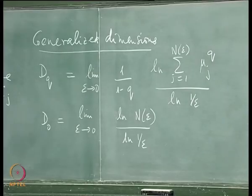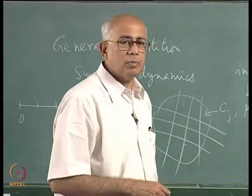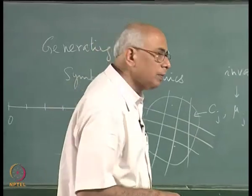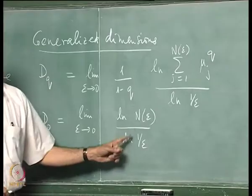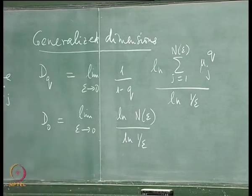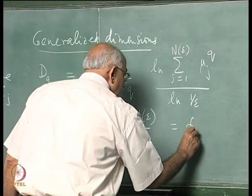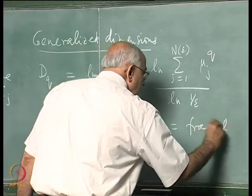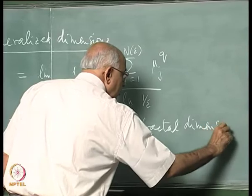I should mention that all transients have died out and the system is continuously evolving on its strange attractor — that is why we use the invariant measure. This D_0 is the fractal or box-counting dimension of the attractor. There are many fractal dimensions, and this is the first of the lot. For positive q, the sum is dominated by cells with large μ_j; for negative q, cells with small μ_j dominate.